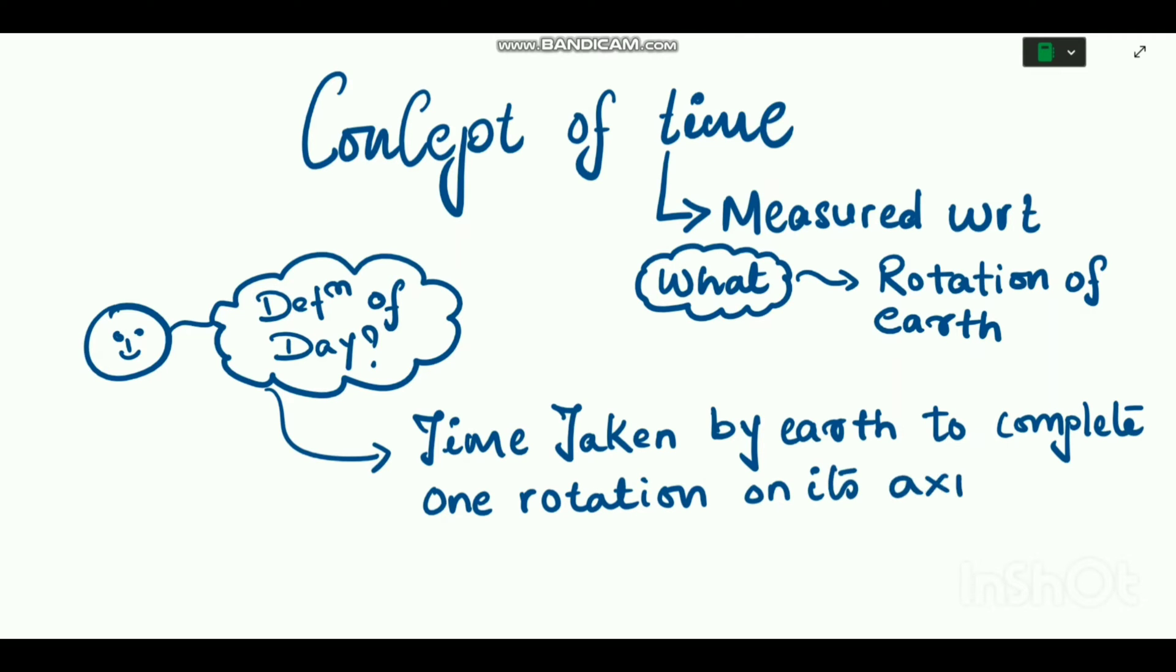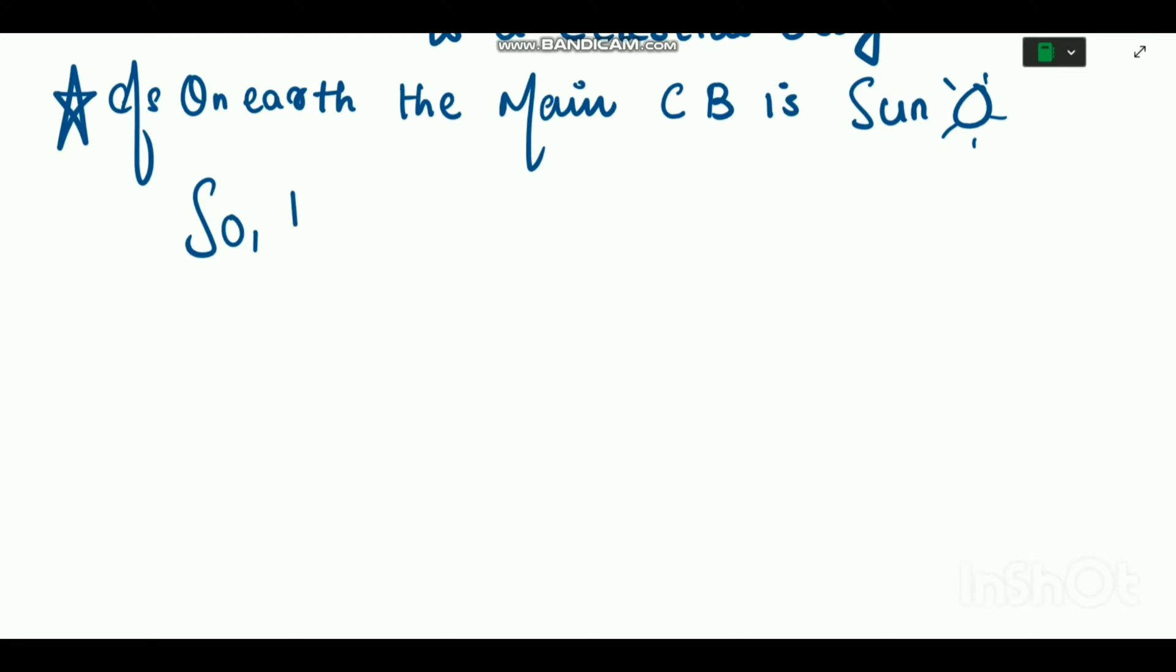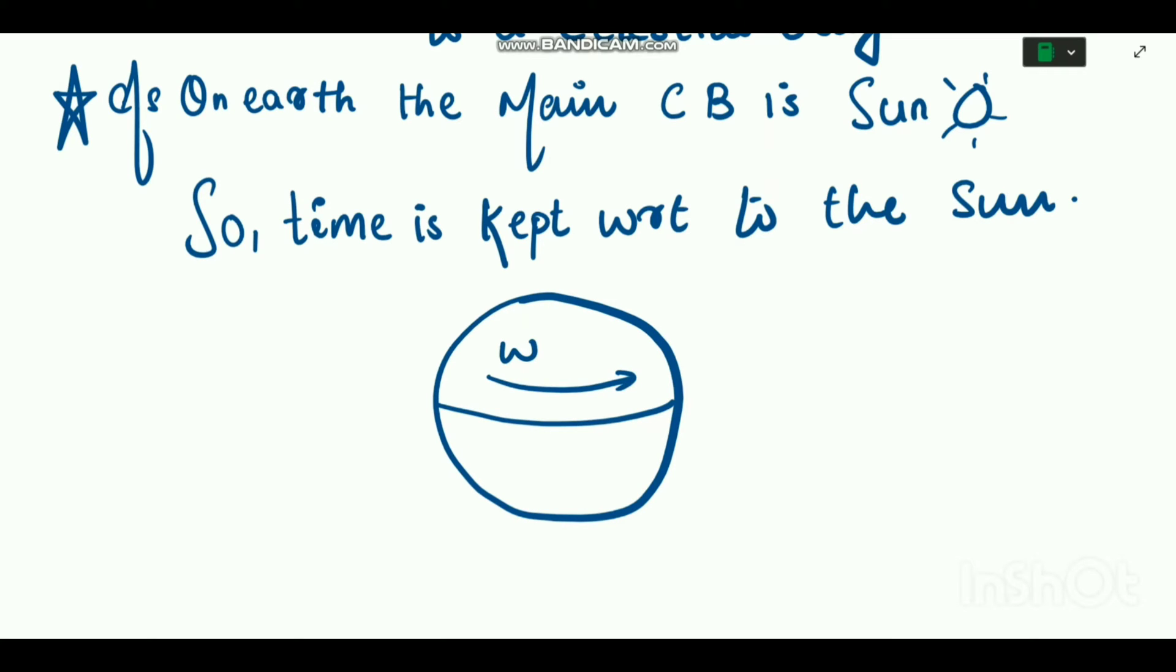But how will we select that celestial body? Because on earth the main celestial body is Sun, so time is kept with respect to the Sun. And as we all know, earth rotates from west to east, and due to this Sun rises in east and sets in west.